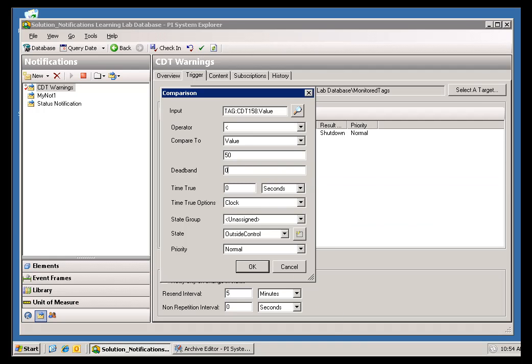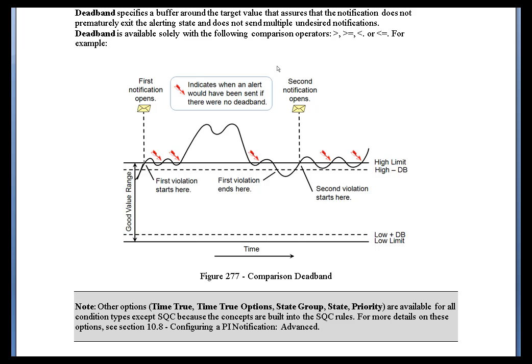I'd like to illustrate from something you'll find in the Class Workbook. If you take a look here, this shows you the activity of a Deadband. If we've specified a Deadband to be this interval that you see right here, that interval ends up being something that has to be crossed as a boundary before something can go back out of Alarm.